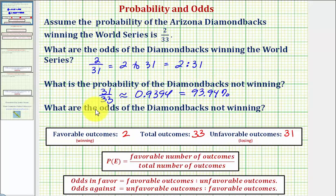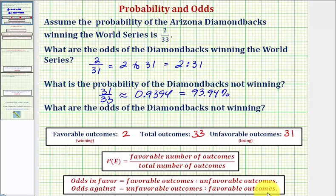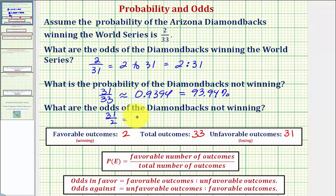Finally, what are the odds of the Diamondbacks not winning? This would be the odds against, which is the ratio of the number of unfavorable outcomes to the number of favorable outcomes. So unfavorable to favorable would be 31 to 2. We can write this in fraction form, in words as '31 to 2,' or using a colon as 31:2.